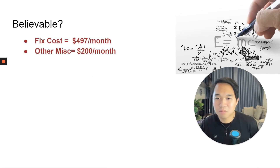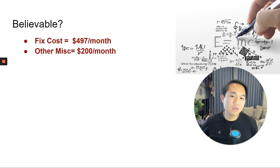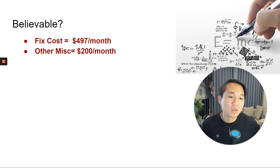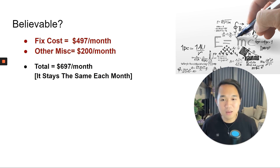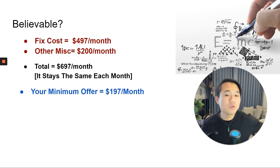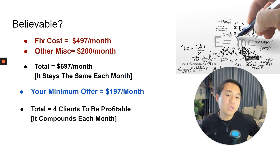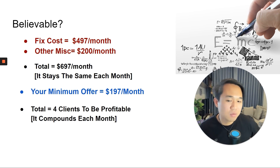Let's break through some math. The fixed cost is $497 for GoHighLevel, plus other software such as Mailgun for email and Twilio for SMS. If you allow $200 a month for outsourced support or coding, your total estimated fixed cost at the beginning is $697 — around $700. Remember, it stays the same each month — that's why it's called a fixed cost. If you go out there and charge a minimum offer of $197, you need a total of four clients to be profitable. And it compounds each month — if you make four clients this month and another four next month, that becomes eight. It doesn't start from zero. It's compound.